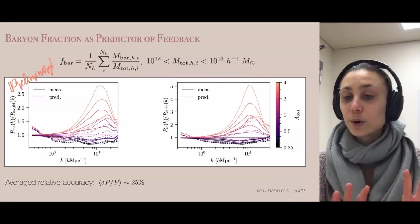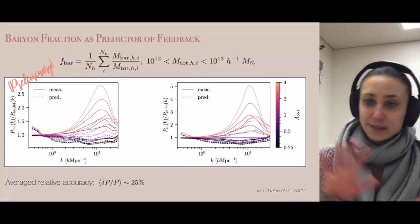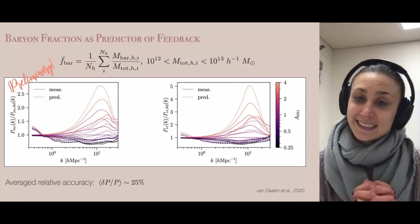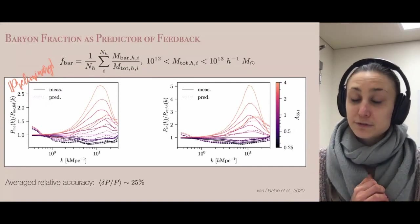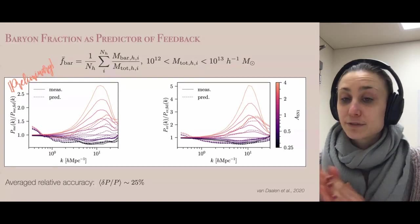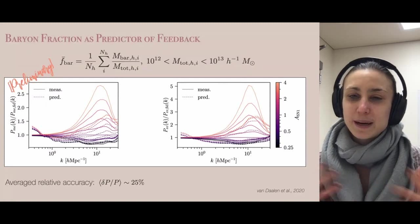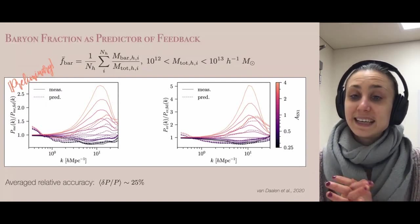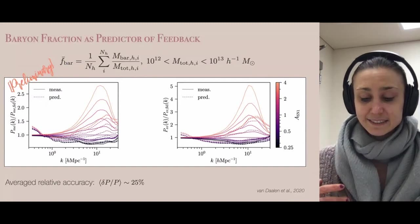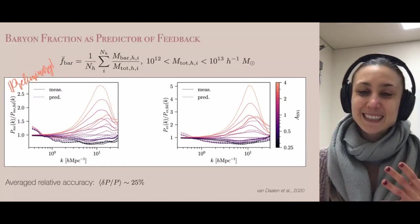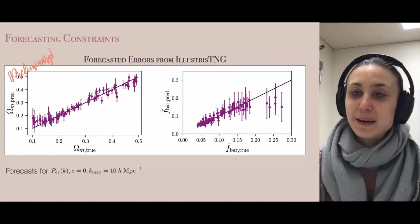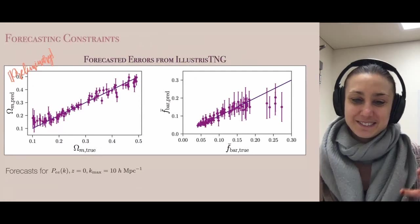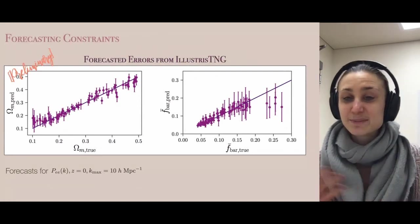To this end, we trained a neural network to predict the power spectra based on cosmological parameters and only f_bar, instead of all the ASN1, ASN2 parameters. The results are shown on this slide — the solid lines show measurements from the simulations and the dashed lines show predictions from our neural network. We find that even though f_bar doesn't capture the full response of the power spectra to baryonic feedback, it does a pretty decent job. This gives us a simulation-independent parameter we can then use to constrain baryonic feedback.